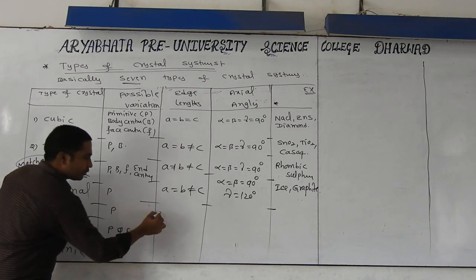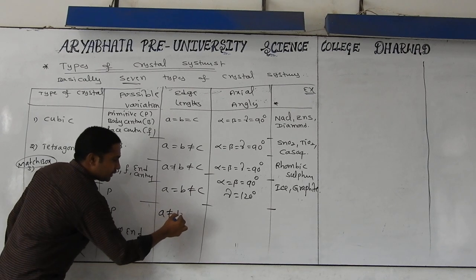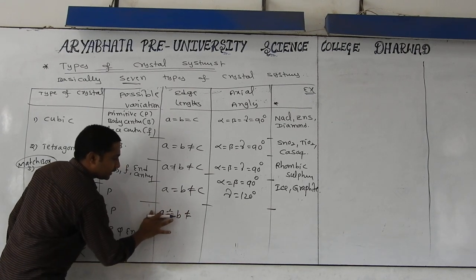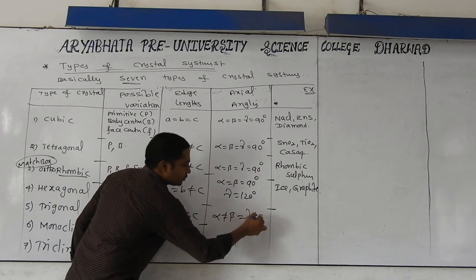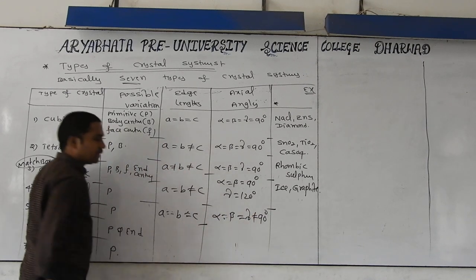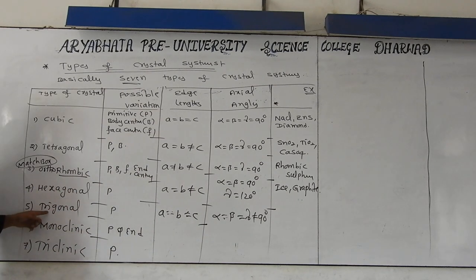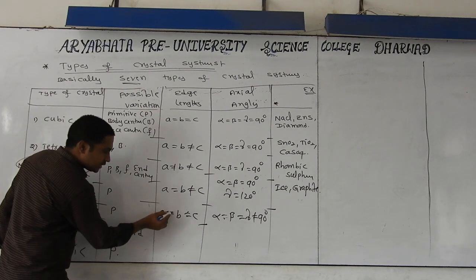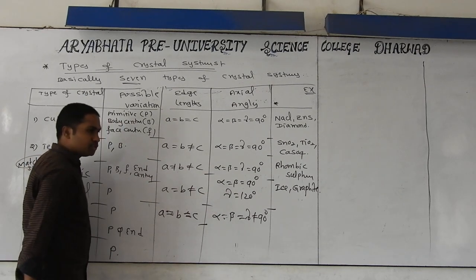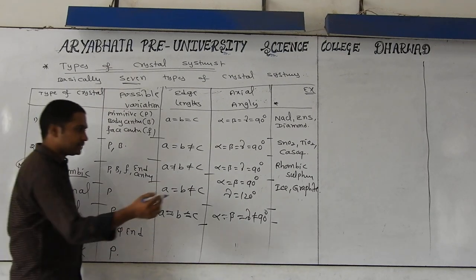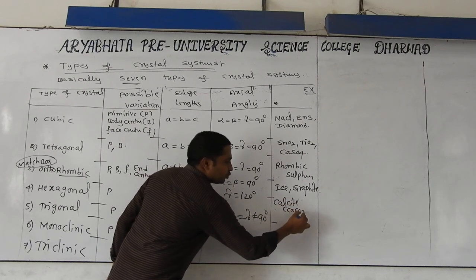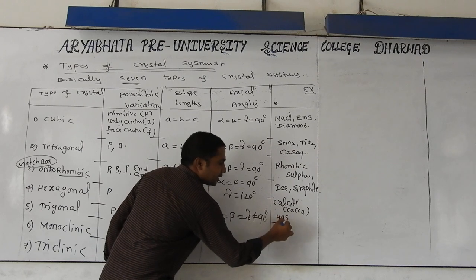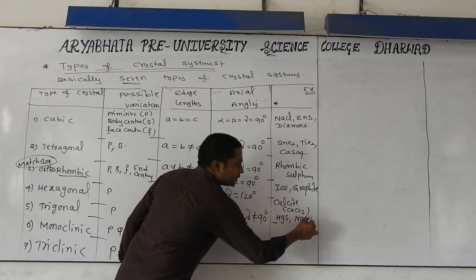One more is trigonal. Under trigonal: a = b = c, all are equal. And angle relation: alpha = beta = gamma, but not equal to 90 degrees. Therefore trigonal geometry is coming — all angles are equal but not equal to 90 degrees. Examples for trigonal: calcite (CaCO₃), mercury sulfide, and sodium nitrate — these fall under this category.